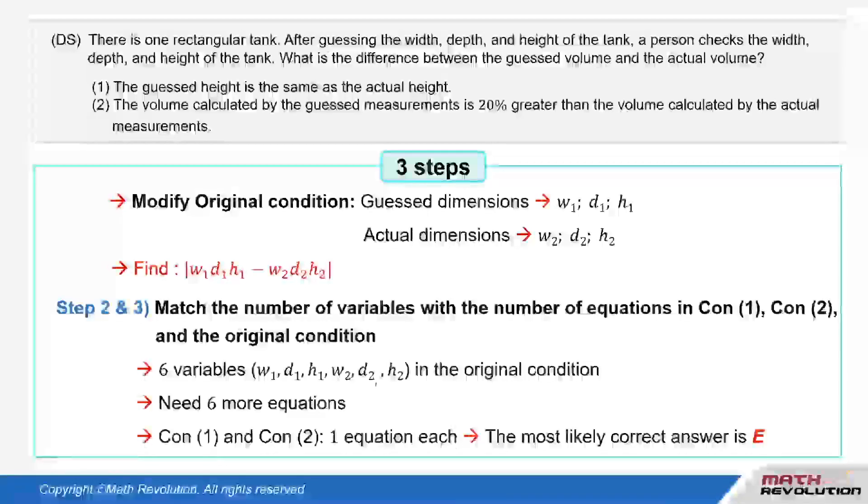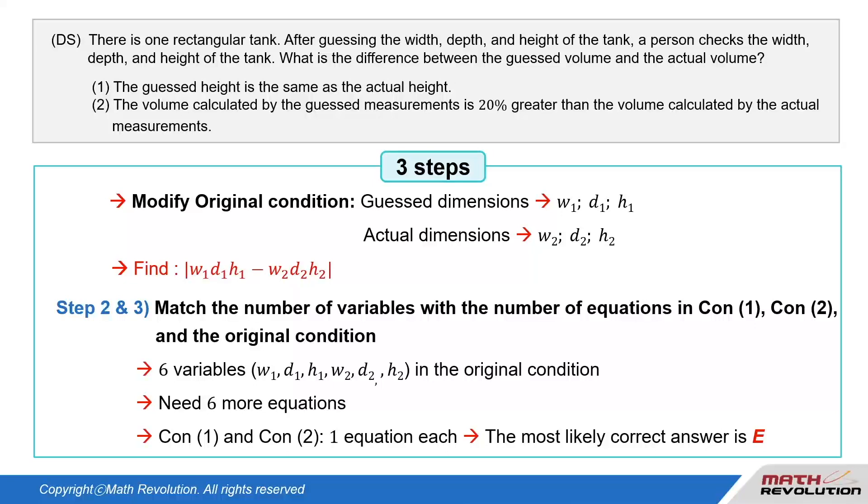Follow the second and third steps. From the original condition, we have six variables: W1, D1, H1, W2, D2, and H2.